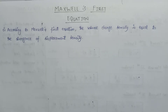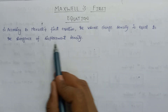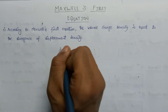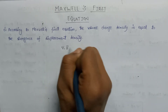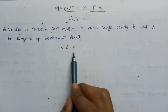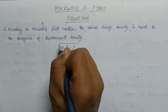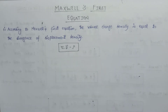Welcome all. In this lecture we are going to discuss Maxwell's first equation. According to Maxwell's first equation, the volume charge density is equal to the divergence of displacement density. If we write its expression, it will be del dot D equals rho, where D is displacement density and rho is volume charge density.